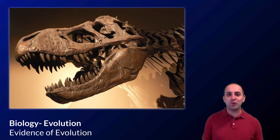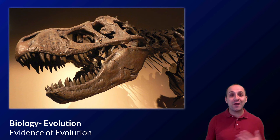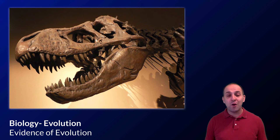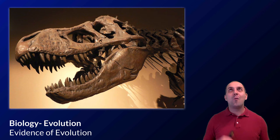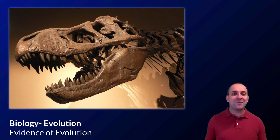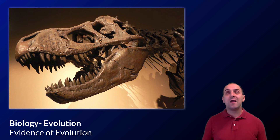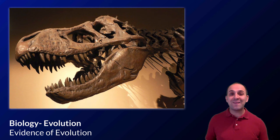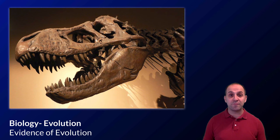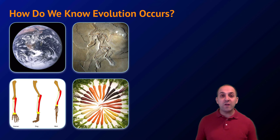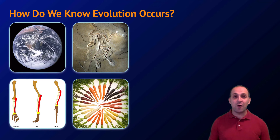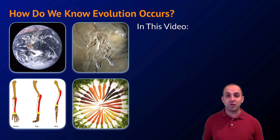Hi and welcome to our evidence of evolution video here in our evolution unit. The picture I've gone with here is a T-Rex, which I think is as good an example as any of the larger notion that there is a giant pile of evidence to support evolutionary theory. And of course as a scientist you should expect that any scientific theory is based on a large supporting body of evidence. The question we're going to be answering in this video is: how do we know that evolution occurs?